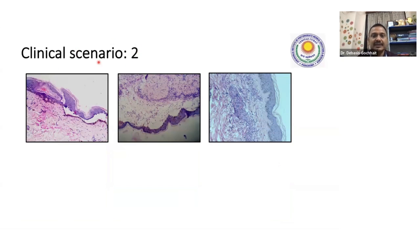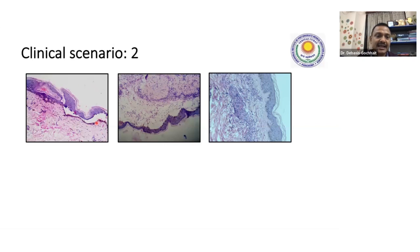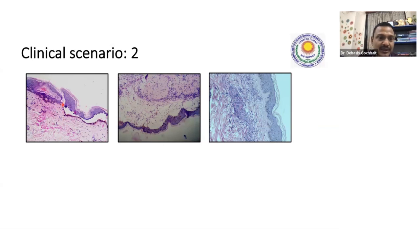Now coming to clinical scenario number two — I have included three skin biopsies of different patients, just to set up the session. These pictures you will have to remember because they can be image-based questions. Here you see a vesiculobullous disorder — the epidermis is detached from the dermis. In histopathology, we need to know whether the detachment is within the epidermis, in the supra-epidermal region, or at the junction.